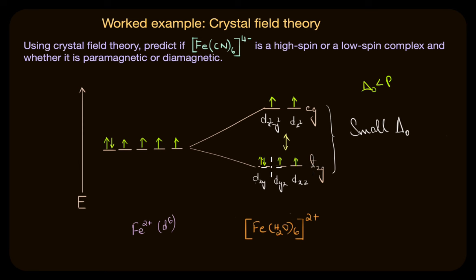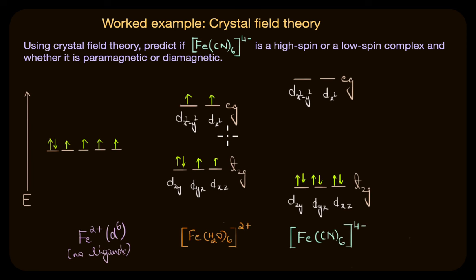The final configuration looks something like this where we have 4 electrons in the t2g orbital and 2 electrons in the higher energy eg orbital. This results in a high spin complex which is paramagnetic due to the presence of unpaired electrons here. As you can see here we have 4 unpaired electrons and that makes [Fe(H₂O)₆]²⁺ a paramagnetic complex.